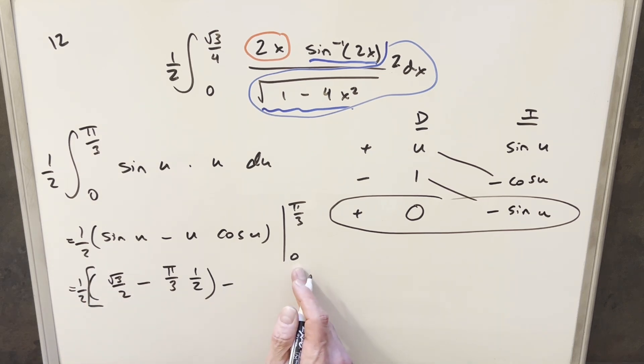Then continuing on, evaluate at 0. Sine of 0 is going to be just 0. Minus, plugging in a 0 for u, that's going to be 0 times cosine, which is 1. Anyway, this whole piece is 0, so we don't care about this.